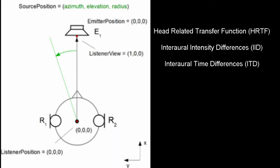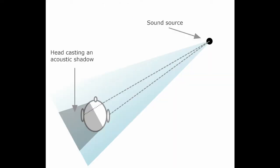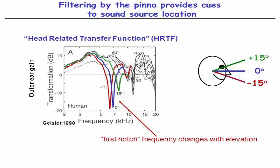In addition to head-related transfer function, disparity between time and amplitude, and head shadowing, we use our outer ear to help us locate sounds. In this demonstration, we are going to simulate what happens when sound waves are reflected by the individually unique folds of our outer ear.